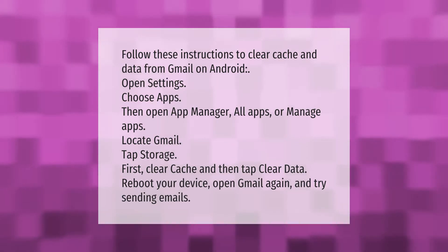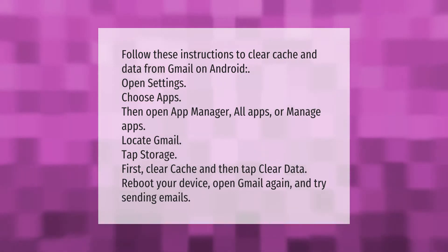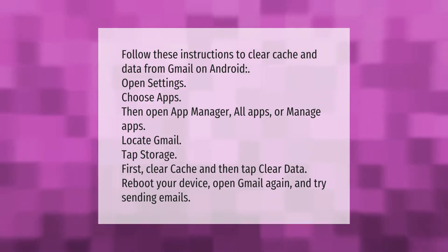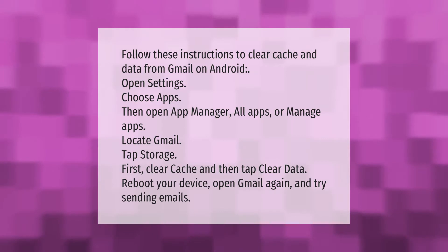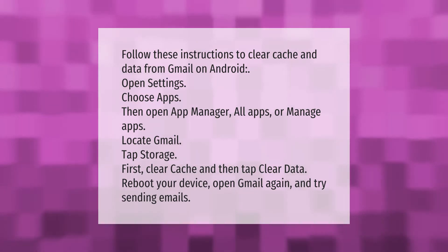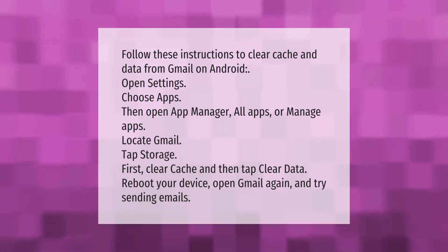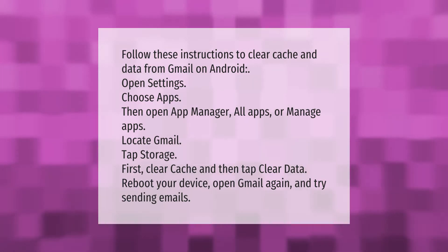Follow these instructions to clear cache and data from Gmail on Android. Open Settings, choose Apps, then open App Manager — All Apps or Manage Apps. Locate Gmail, tap Storage, first clear cache and then tap Clear Data. Reboot your device, open Gmail again, and try sending emails.